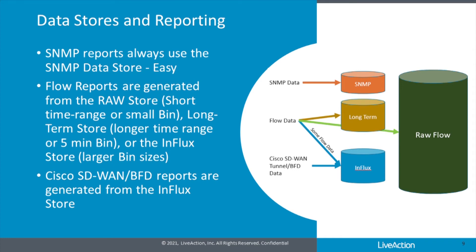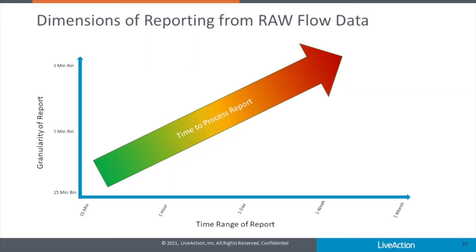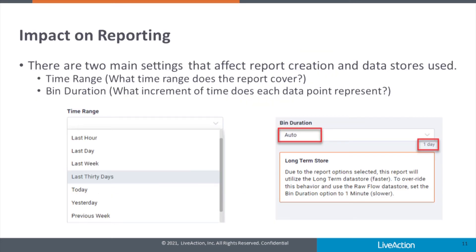Now that we understand more about the different data stores, let's look at how this makes for a better reporting experience. The key concept to keep in mind is the bin size, but this must be looked at in conjunction with the report time range. When configuring your reports, there are two dimensions that will affect your performance — how long it takes to run the report. When covering longer time ranges, you're asking to search through more data. Similarly, when you ask to search with a finer granularity or bin duration, you're again looking through more data. You can greatly increase the amount of data to look through when setting both a wide range and a fine granularity.